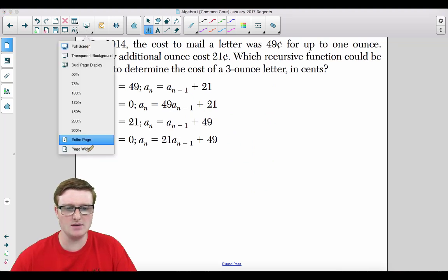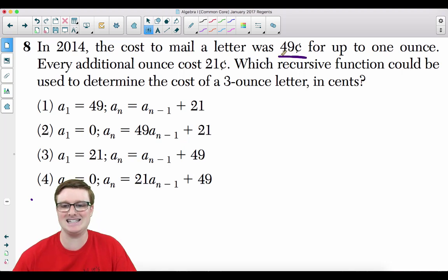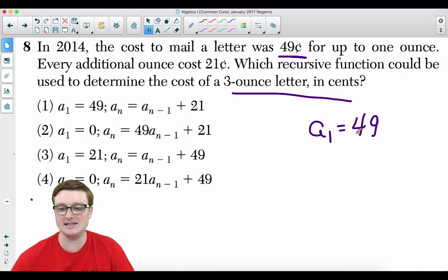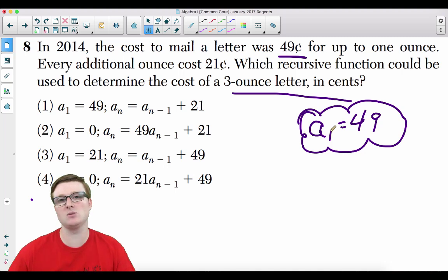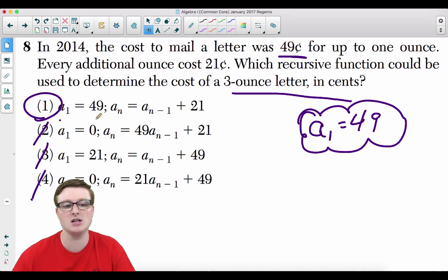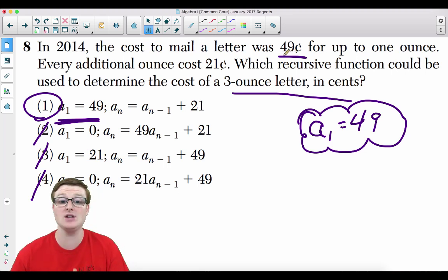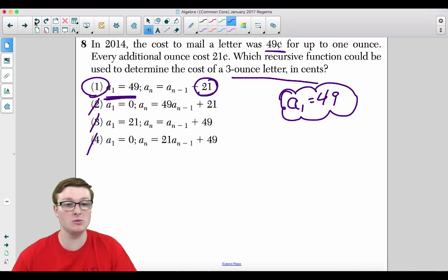Number 8. In 2014, the cost to mail a letter was 49 cents for up to 1 ounce. Every additional ounce costs 21 cents. Which recursive function could be used to determine the cost of a 3 ounce letter in cents. First and foremost, you need to understand that a sub 1 is 49 cents. All of these equations are in terms of cents. So a sub 1 has to be 49. If you know that a sub 1 is 49, you can actually just simplify it. Choice 1 is the answer. Because the first term has to be 49 cents. That's your first ounce. And every additional ounce is you're adding 21 cents. And that is it. Question number 8 is done.